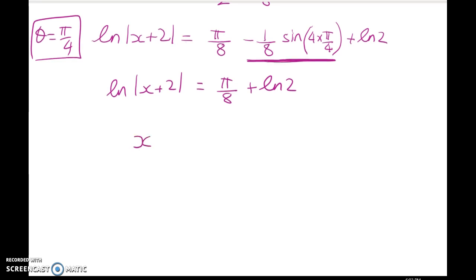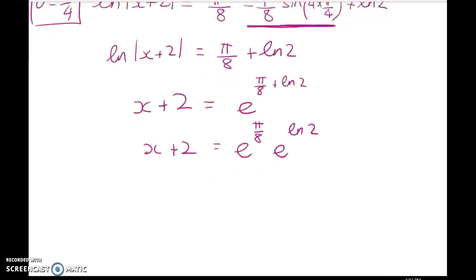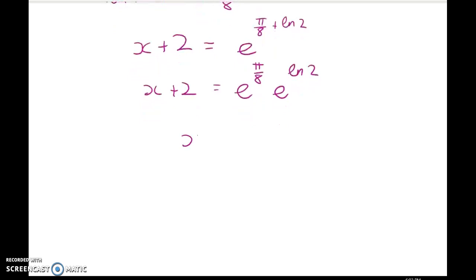All right, now e to the power of both sides will give me x plus 2 is equal to e to the pi on 8 times e to the log of 2. So we get x is equal to negative 2 plus 2 e to the pi on 8.